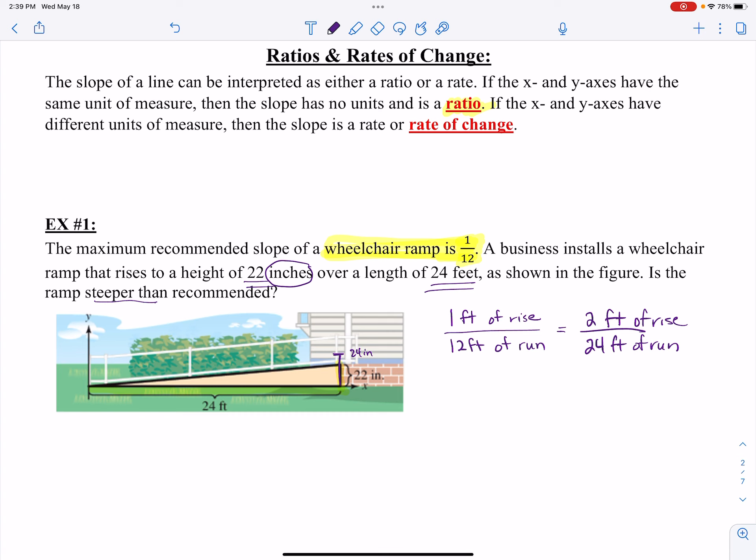So this clearly is under the recommended slope. So we would say, no, it is not steeper than the recommendation. You had up to 24 inches to play with, and it only got to 22. So that's one way to look at that. That's not the only way to look at that question, but that is what you're being asked, and you're given the slope as a ratio.